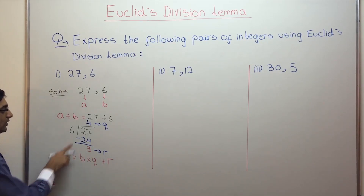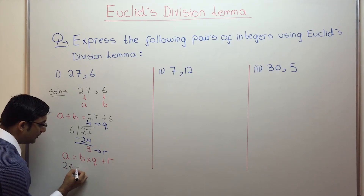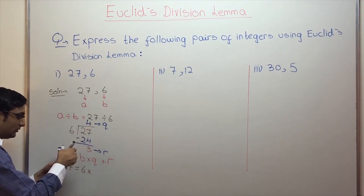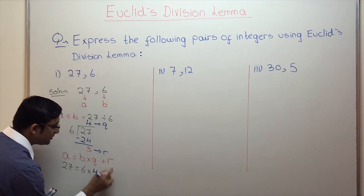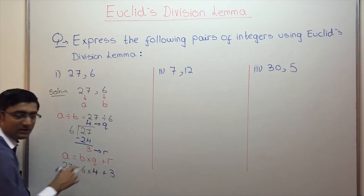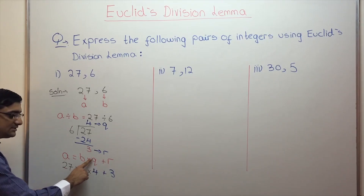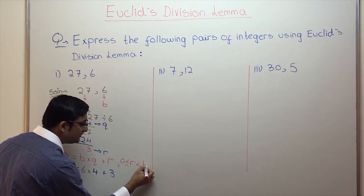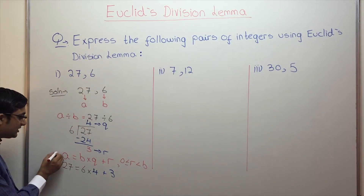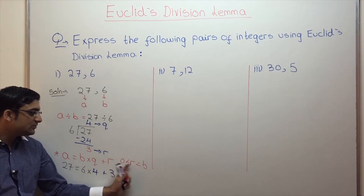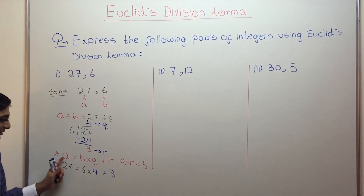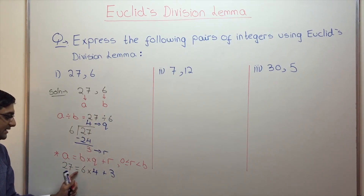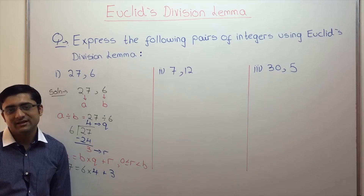Now just plug in the values. What is A? It is 27. Is equal to B, that is 6, multiplied by the quotient Q, that is 4, plus the remainder, which is 3. Don't forget to write the remainder condition: where R is greater than or equal to 0 and less than B. So 27 equals 6 into 4 plus 3. As simple as that.